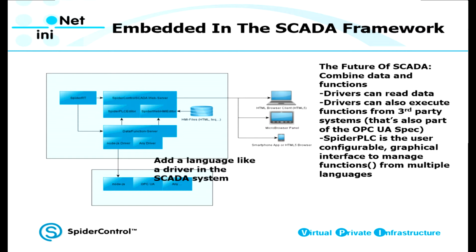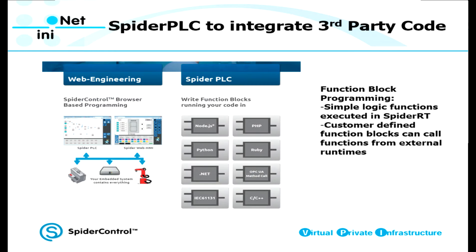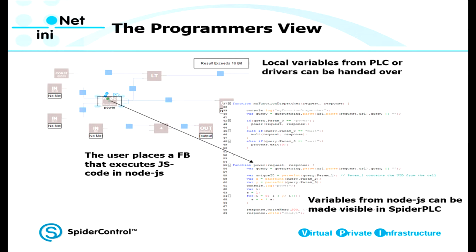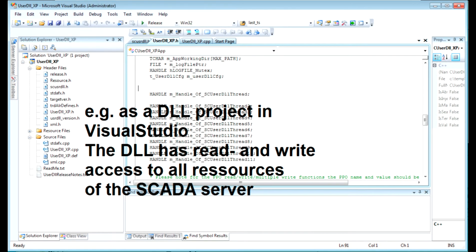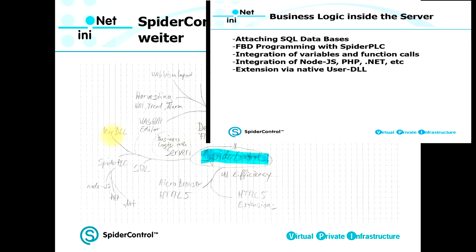This is one of the ideas behind OPC UA — not only to aggregate data, but also to involve functions and remote procedure calls. Spider PLC is able to not only execute internal simple function blocks, but also to call external functions written in languages like Python, Node.js, PHP, .NET, etc. This brings very big flexibility in extending the functionality of the data server, including creating all kinds of reports. Additionally, we can add our own DLL to the data server, which is used typically when we need tasks that require very high performance.